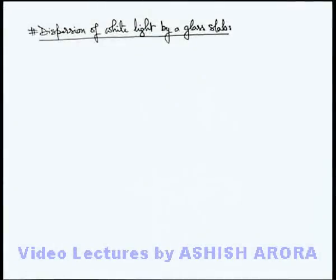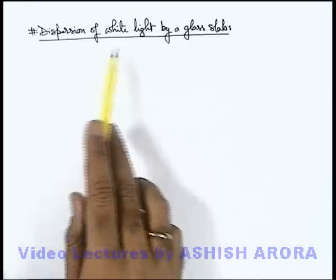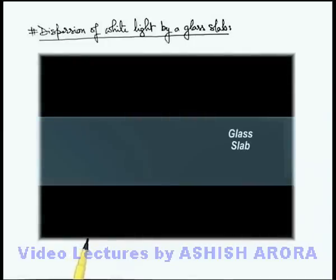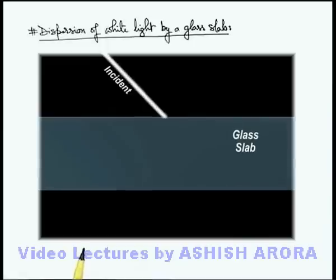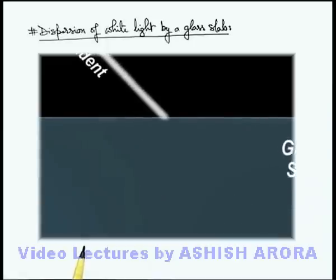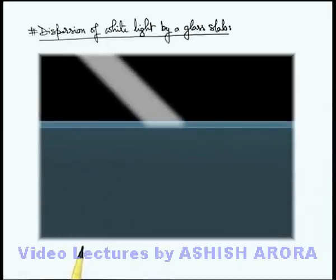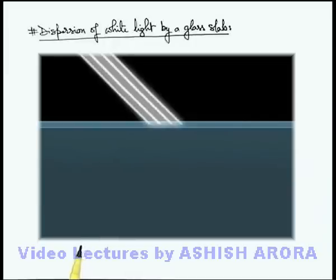Let us now understand the phenomenon of dispersion of white light by a glass slab. We will understand this with the help of a realistic situation. Here you can see a glass slab on which a white light beam is allowed to be incident. Now let us have a close look at the surface where light is incident. In this situation, the light beam can be considered as a bundle of several light rays.